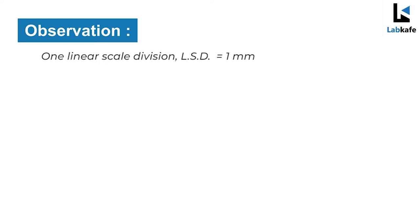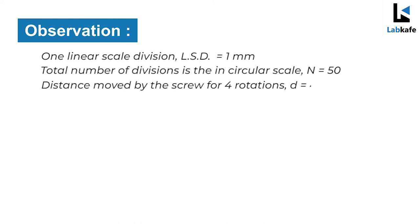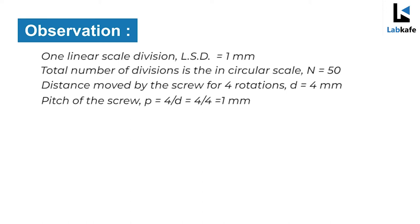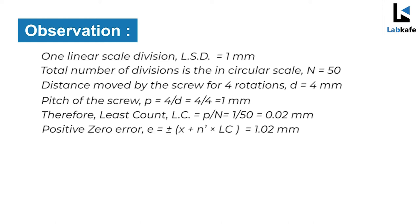Observation: one linear scale division (LSD) equals 1 mm. Total number of divisions on the circular scale N equals 50. Distance moved by the screw for 4 rotations d equals 4 mm. Pitch of the screw P equals 4 divided by 4, which equals 1 mm. Therefore the least count LC equals P divided by N, which is 1 by 50, equals 0.02 mm.